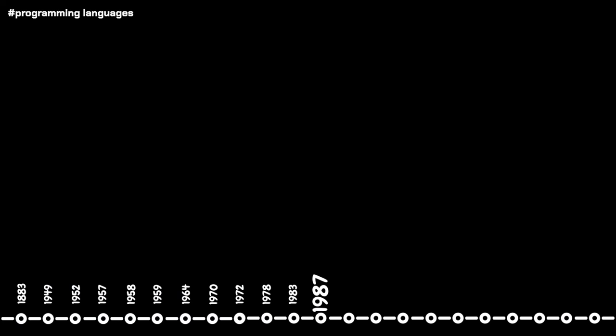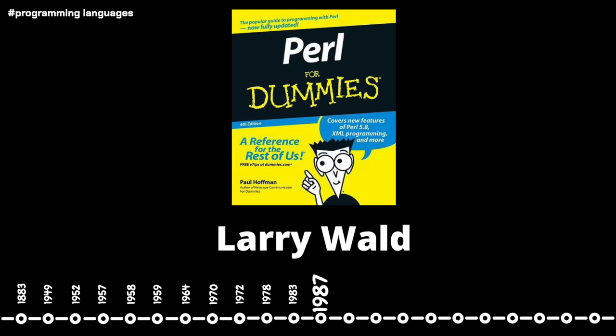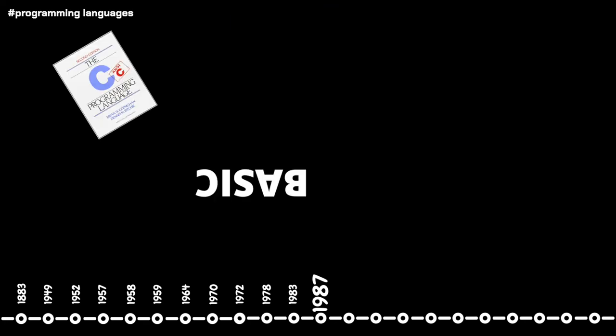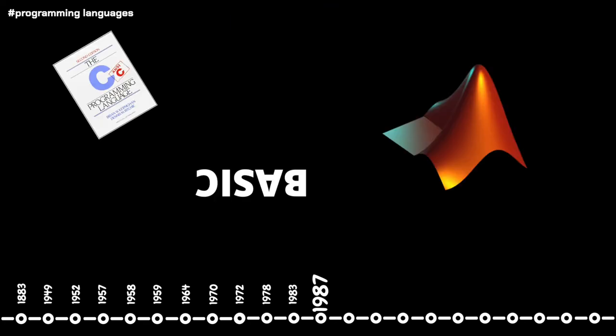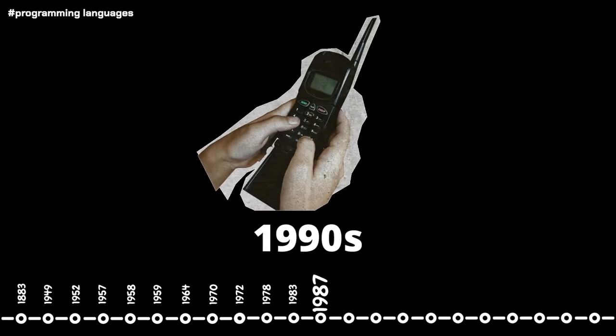In 1987, the programming language Perl makes an appearance, developed by Larry Wall as a scripting language for text editing. Oddly enough, Perl has no official acronym. Perl borrows features from C, BASIC, and Lisp, and is commonly used in Linux system administration, web development, and network programming.